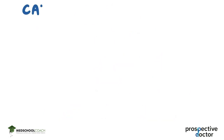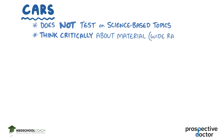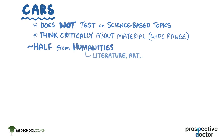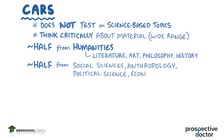The CARS section is a little different in that it doesn't test you on science-based topics, but instead asks you to think critically about material from a wide range of disciplines. About half of the questions will come from texts in the humanities, like literature, art, philosophy, and history. The other half will come from texts in the social sciences, like anthropology, political science, or economics.